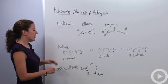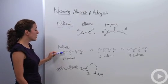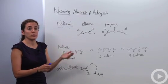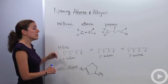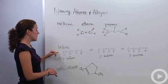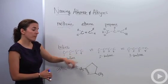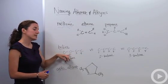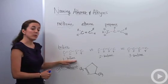Let's look at butene in a bit more depth. Going back to our naming rules for alkenes, we have to number our parent carbon chain: one, two, three, four. If the double bond is between the first and second carbon, we would call it 1-butene.